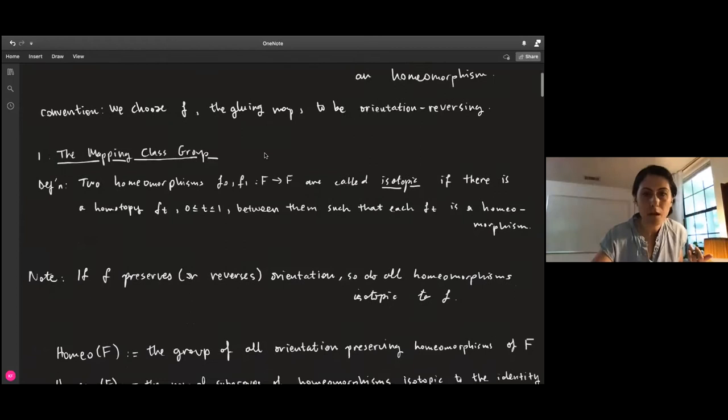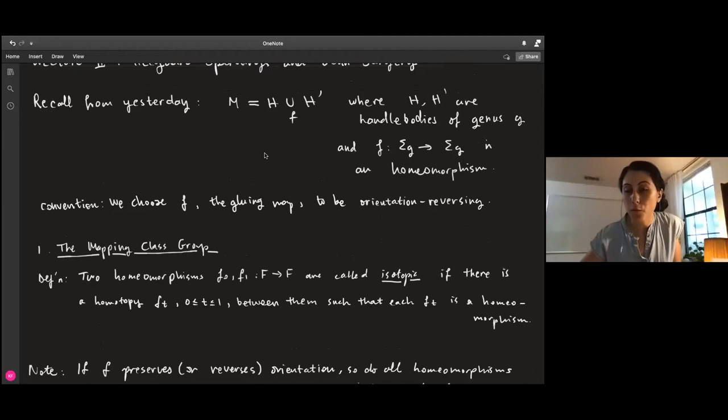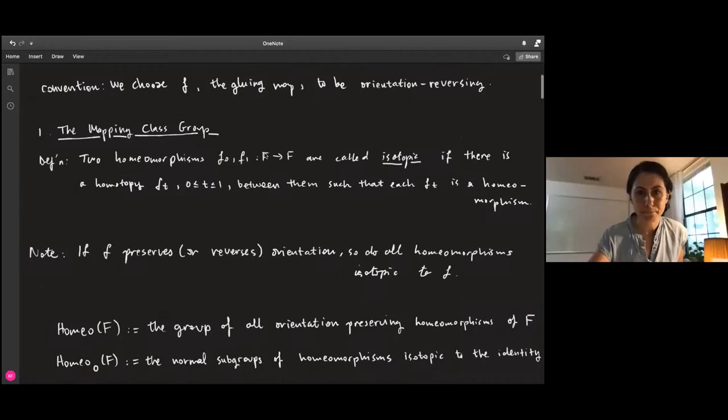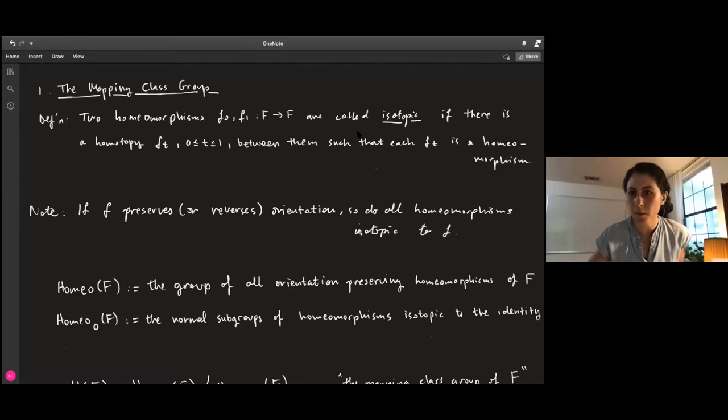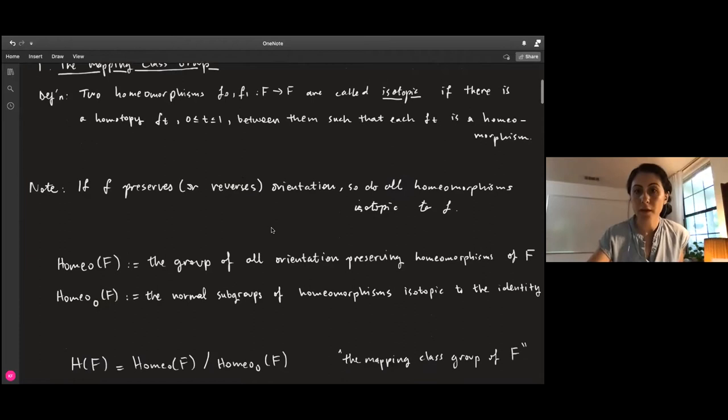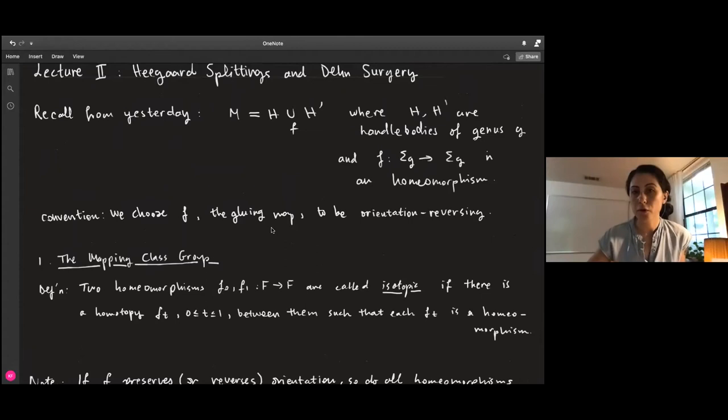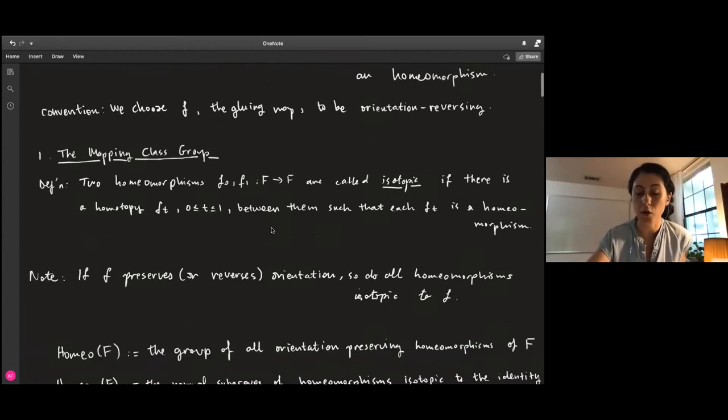It makes sense to investigate diffeomorphisms or homeomorphisms of surfaces. If we have two homeomorphisms F₀ and F₁, we call them isotopic if there is a homotopy Fₜ between them such that at each level Fₜ is also a homeomorphism. The isotopic homeomorphisms induce homeomorphic three-manifolds, so we are only interested in isotopy classes.